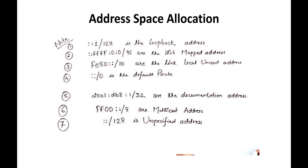We can use the loopback address to ping and confirm that your hardware and system are working. If the internet is not working, we configure a new IP address to troubleshoot. The loopback address is used to ping the NIC card — it checks whether your system and hardware are working properly or not.